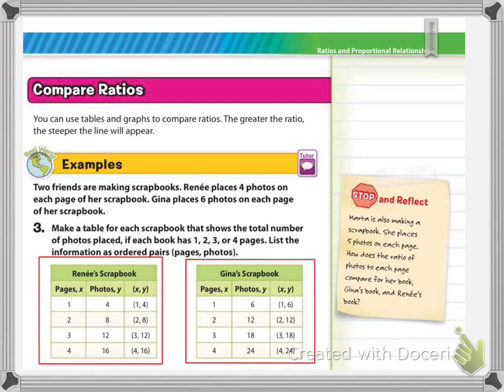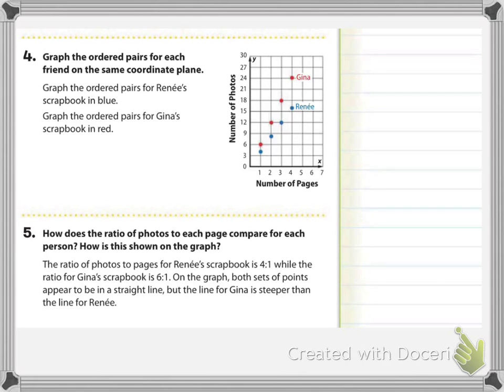So we're going to go on to the next screen to talk about these tables, at least on my thing. On your page it's directly, it's the same one. So if you look at number four here, it says graph the ordered pairs for each friend on the same coordinate plane. So it's important for you to understand that you can do this. Now when you are graphing two different things on the same ordered plane, it is important to indicate which line belongs or which dots belong to which person. Here they use two different colors. They graphed Renee's ordered pairs in blue, and they graphed Gina's ordered pairs in red. So, you know, this is a time where you could use your colored pencils or a pencil and then maybe a blue pen or a red pen to graph when you're doing two different set of dots on the same plane.